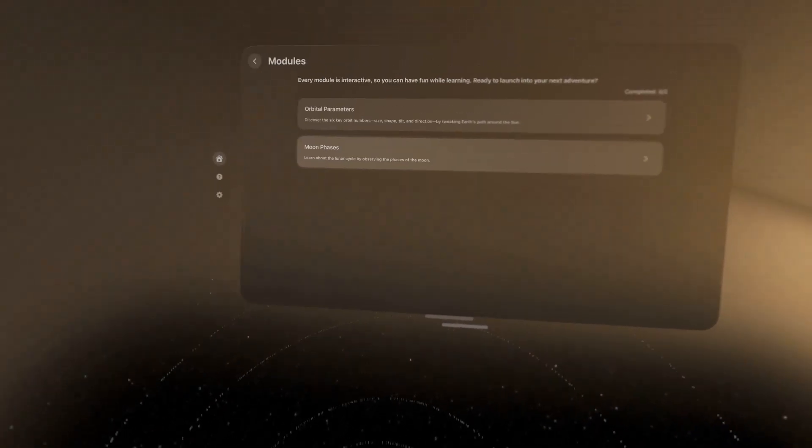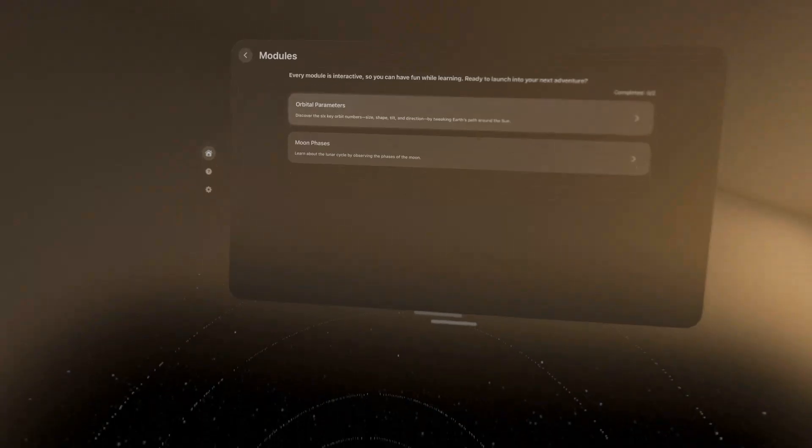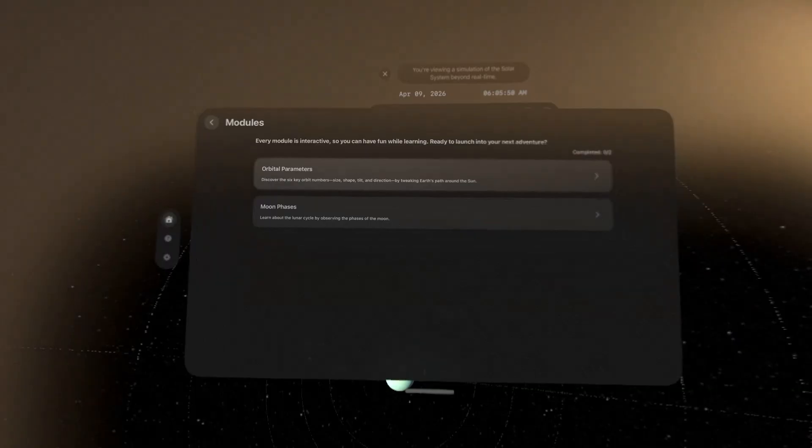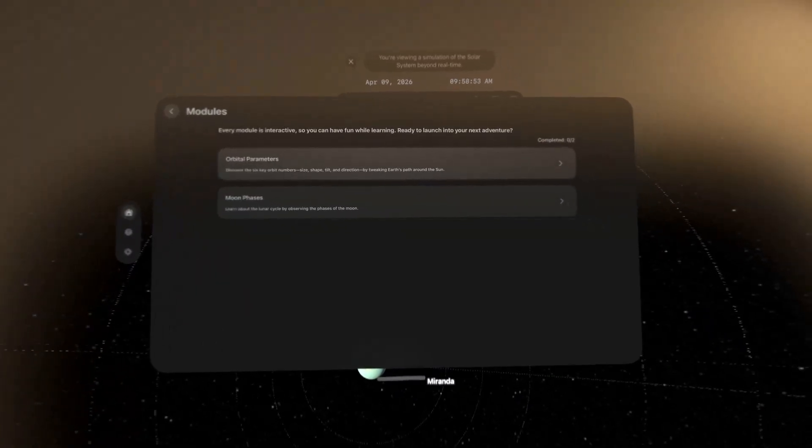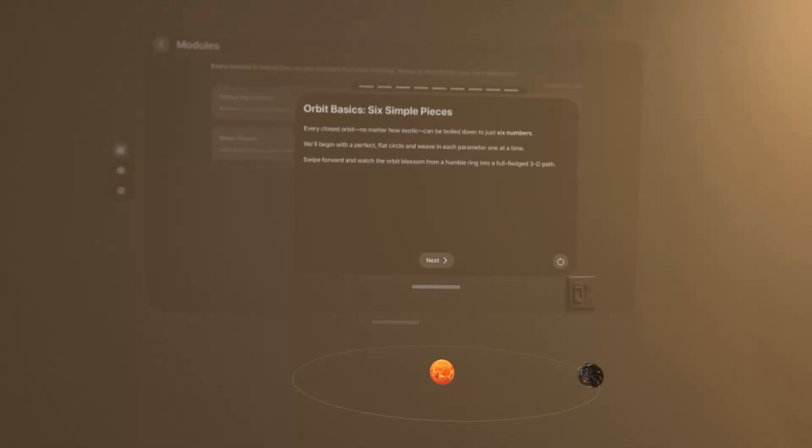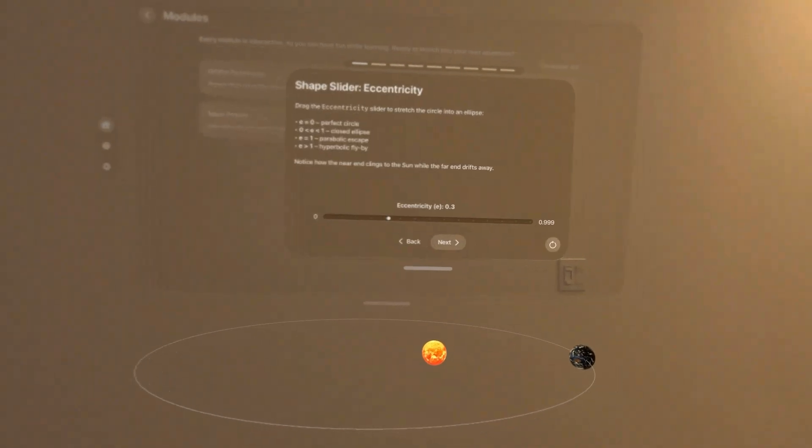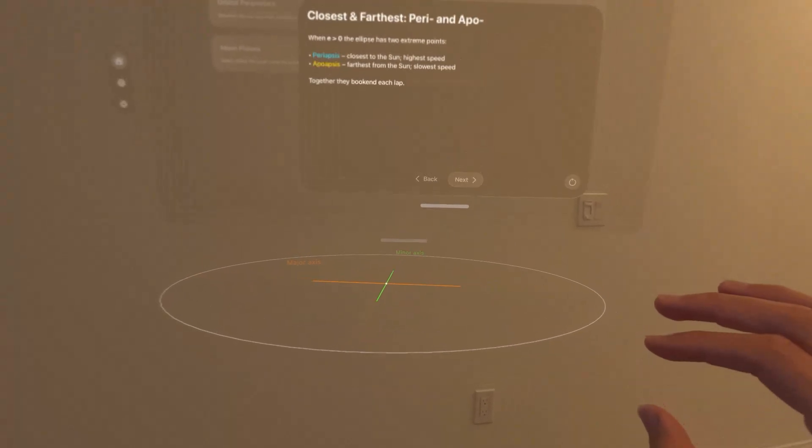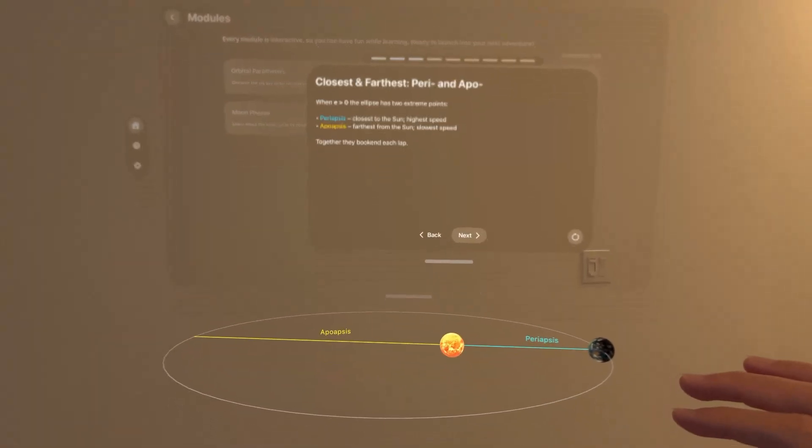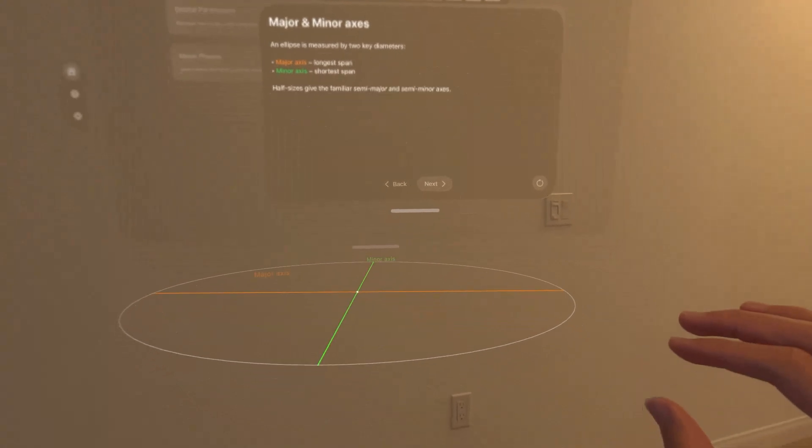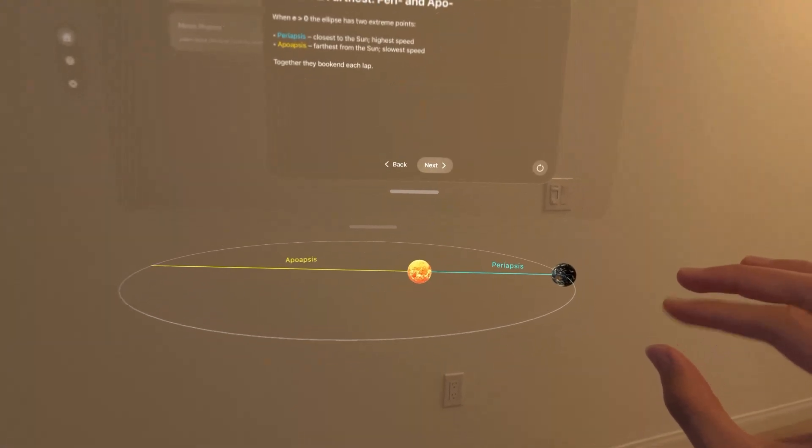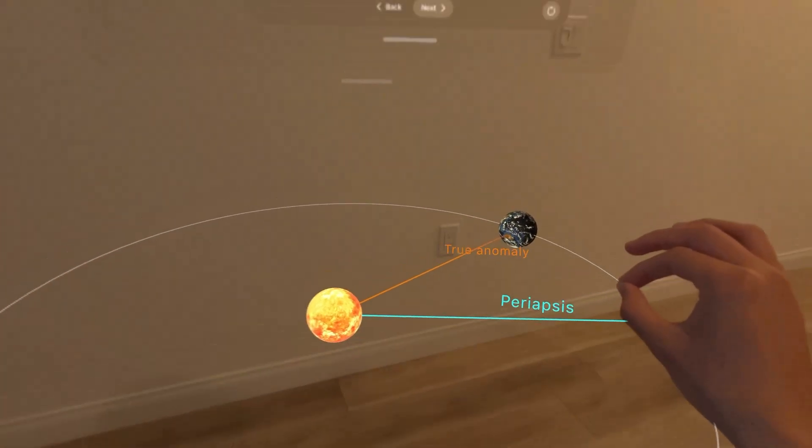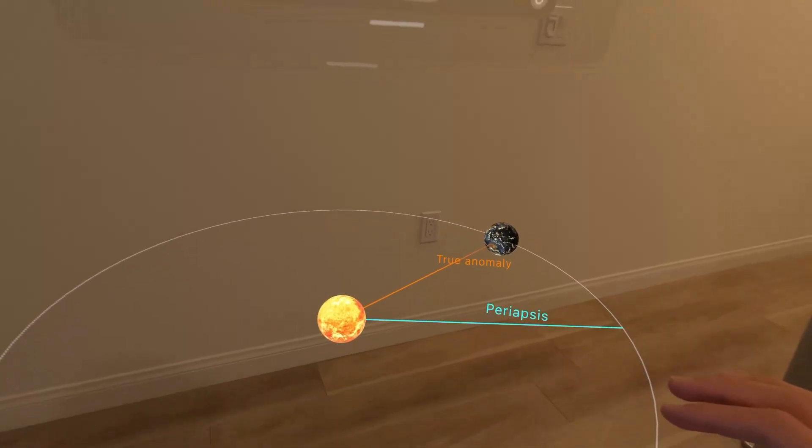Let's do interactive lessons. Orbital parameters. Discover the six key orbit, size, number, shapes, tilt, direction. Let's see. Oh, nice. Major axis, minor axis. Wow. So it has like real time digital animations and different lessons.